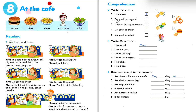Number one: I like pizza. Which picture is pizza? Letter B. Number two: do you like burgers? That's letter D. Number three: look at the big ice creams — letter E.